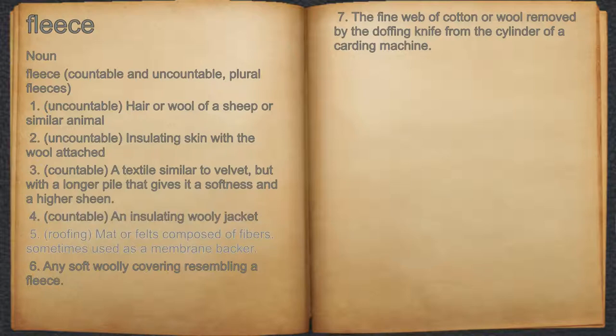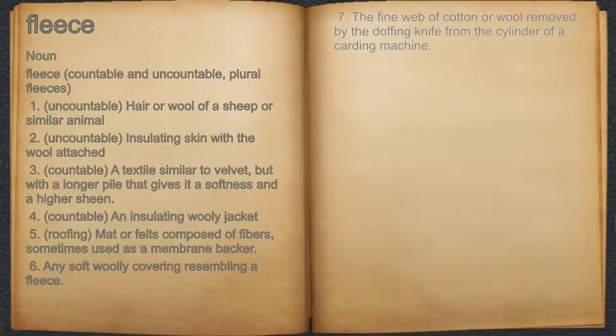5. Roofing, mat or felt composed of fibers, sometimes used as a membrane backer. 6. Any soft woolly covering resembling a fleece. 7. The fine web of cotton or wool removed by the doffing knife from the cylinder of a carding machine.